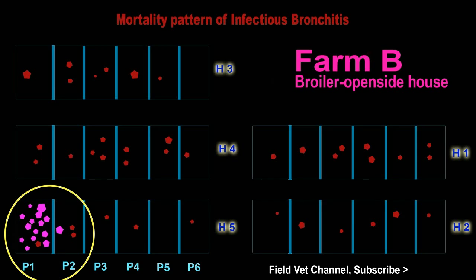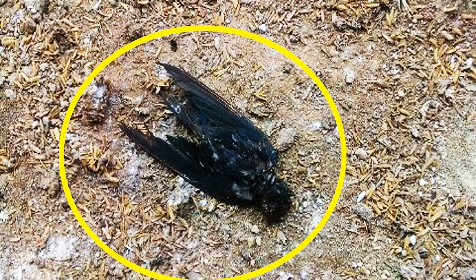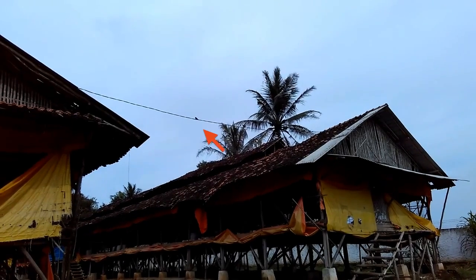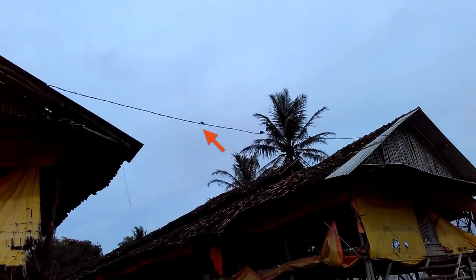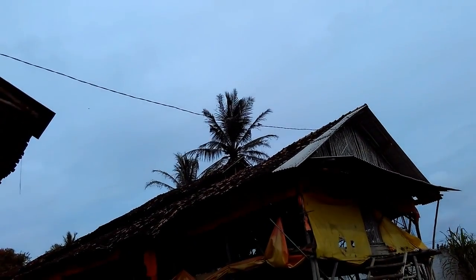This farm had no vaccination program against IB and no vaccination against avian influenza, thus both diseases can occur together. Cases of avian influenza had occurred a month earlier. Many native chickens and ducks in the outside farm area died suddenly due to this virus, and swallow birds in the farm area were also found dead suddenly. There is still the question of why the disease occurred in pen 1 first, given that the entrance to house 5 is at pen 3.